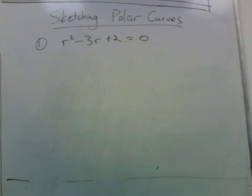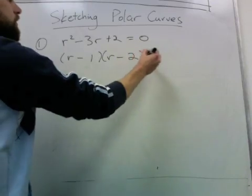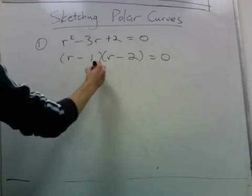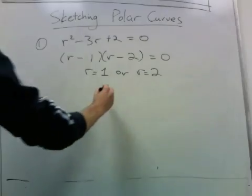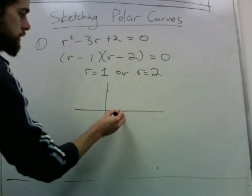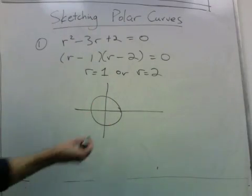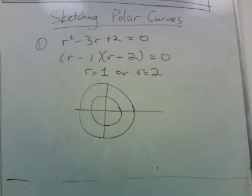Now let's try to sketch some polar curves. So we're given an equation involving the polar coordinates, and now we want to see what the actual curve looks like. In this example, we're given r squared minus 3r plus 2 equals 0. And to see what this means, we can factor it into r minus 1 times r minus 2 equals 0. And this says r equals 1 or r equals 2. And this is real easy to sketch. So we look at all points where r is 1 or the points where r equals 2. So we just have two concentric circles.